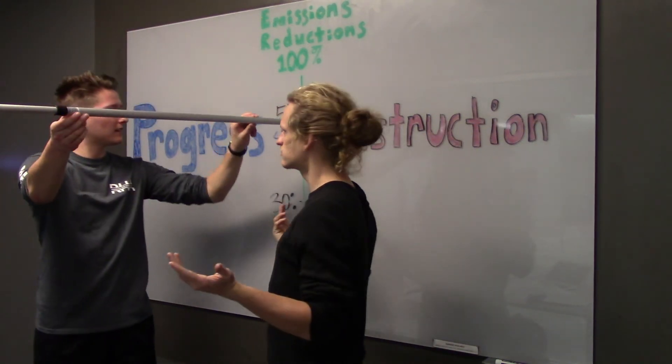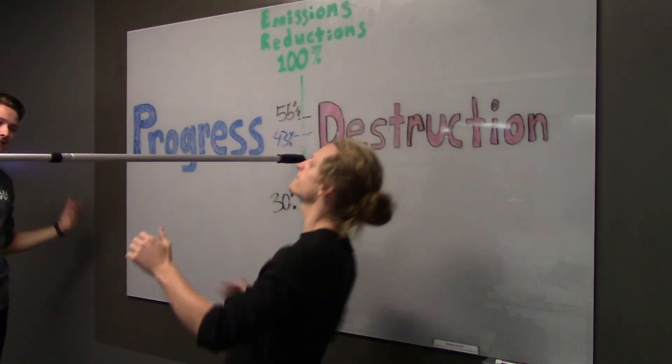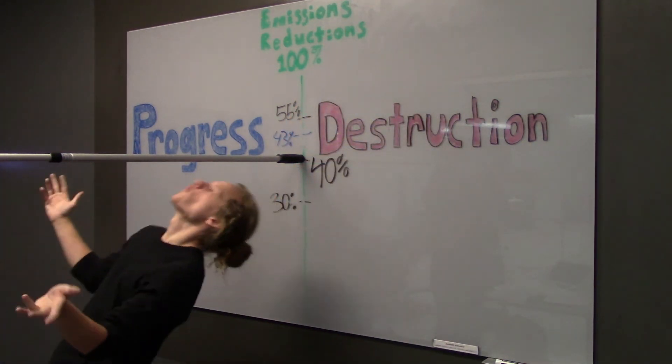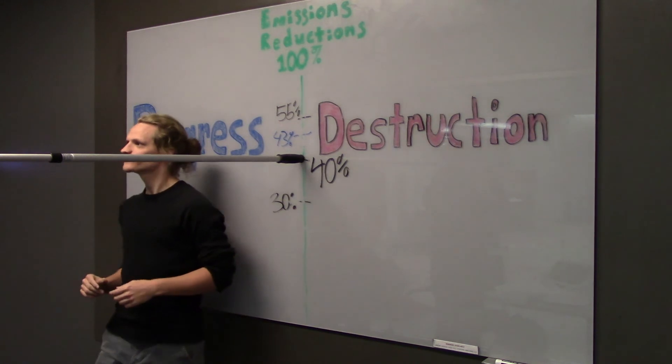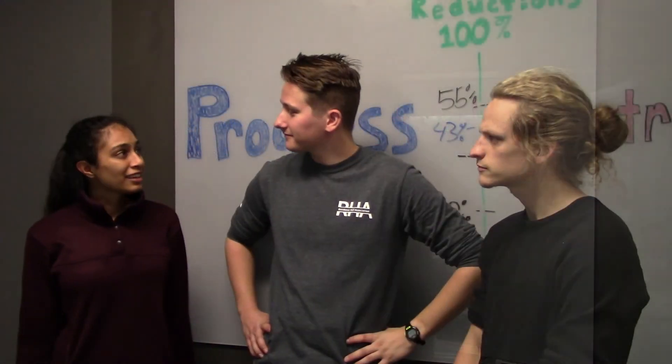If Norway does not account for the lost emissions reduction, then the two countries will be reporting the same reduction in two different places, causing the single reduction to seem twice as large. I think I'm getting the hang of this.